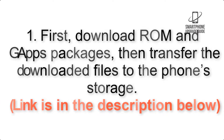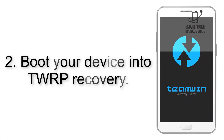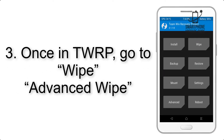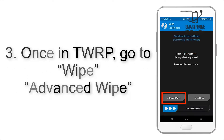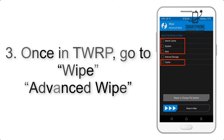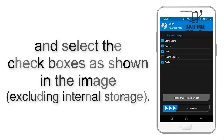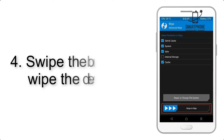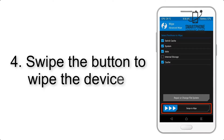Step 2: Boot your device into TWRP recovery. Once in TWRP, click on Wipe, then Advanced Wipe, and select the checkboxes as shown in the image, excluding internal storage. Step 4: Swipe the button to wipe the device.